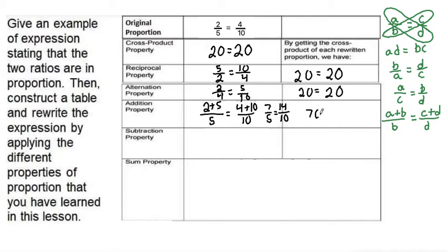10 times 7 is 70, and that's equal to 5 times 14, which is also 70. So this would be our addition property proportion.